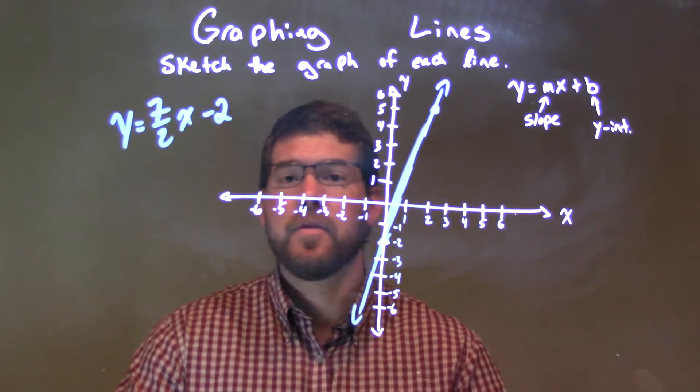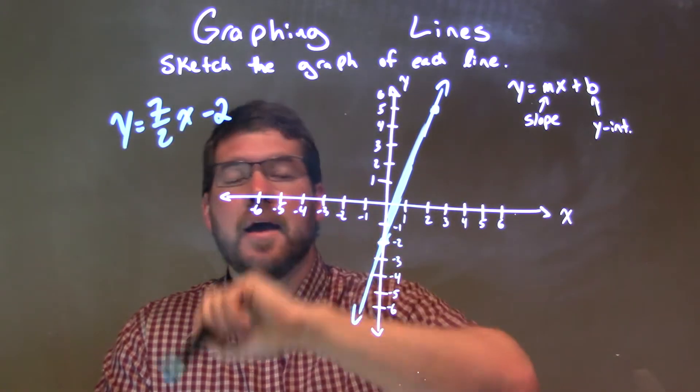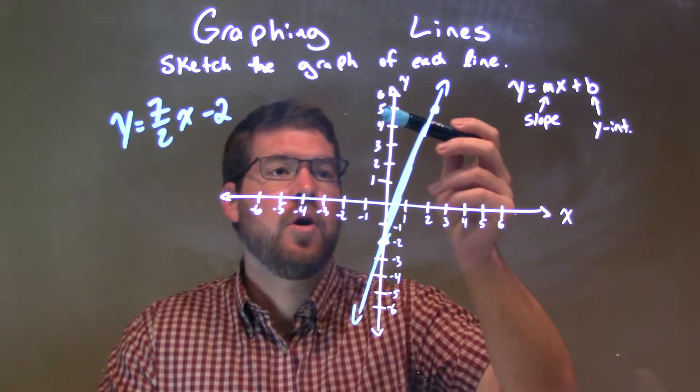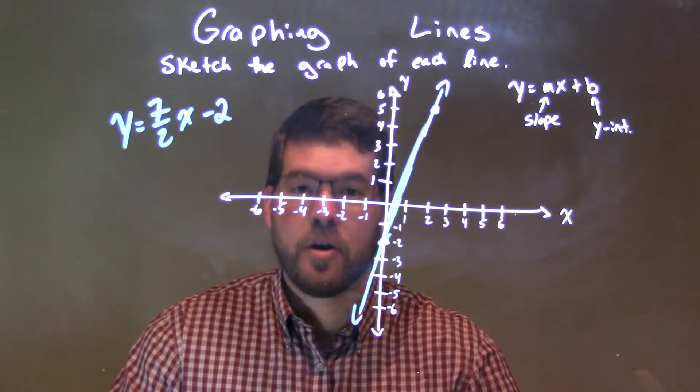Quick recap, the main things we want to look at here are the y-intercept, right here at negative 2, and our slope, 7 halves. We went up 7 units over positive 2, put that point right there, connect the two dots, and now we have our line.